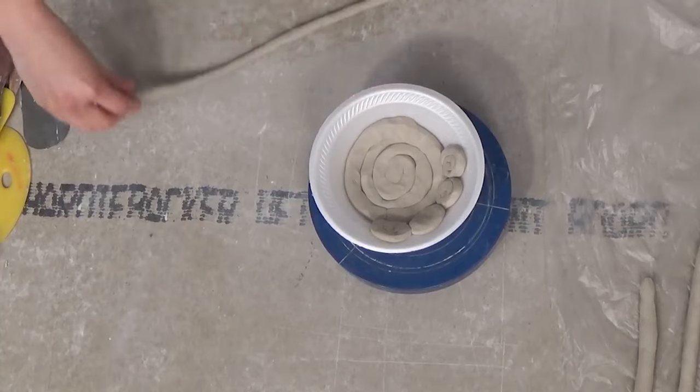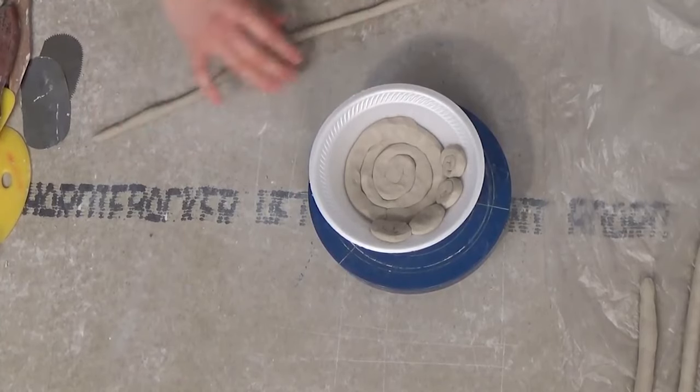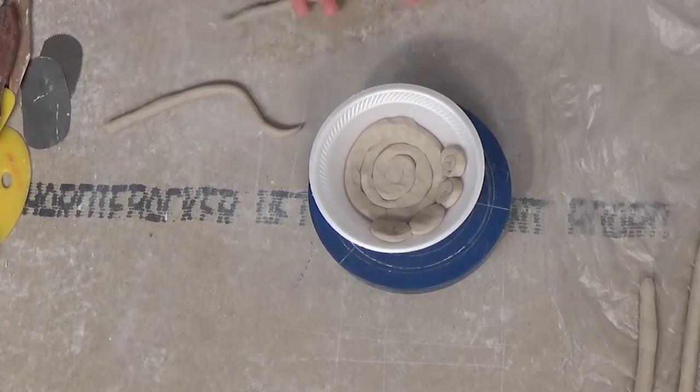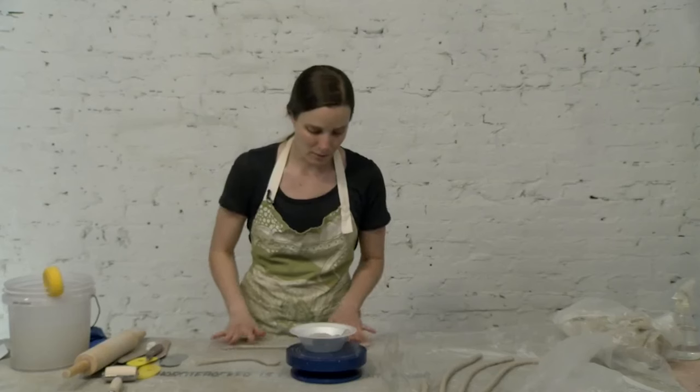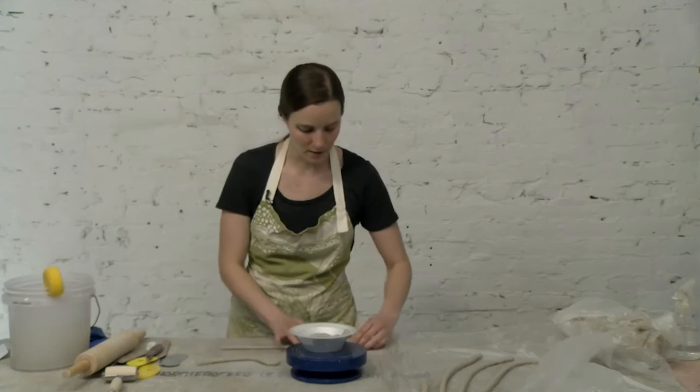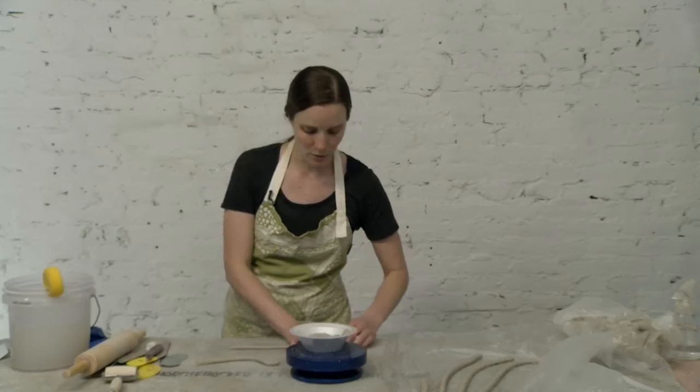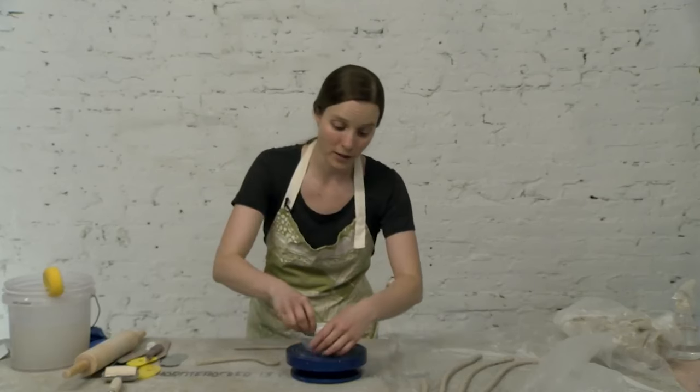It's a good idea to smooth out either the inside or the outside. Because I'm using this as a slump mold, I'm slumping the clay inside of it, so I'm going to smooth out the interior.